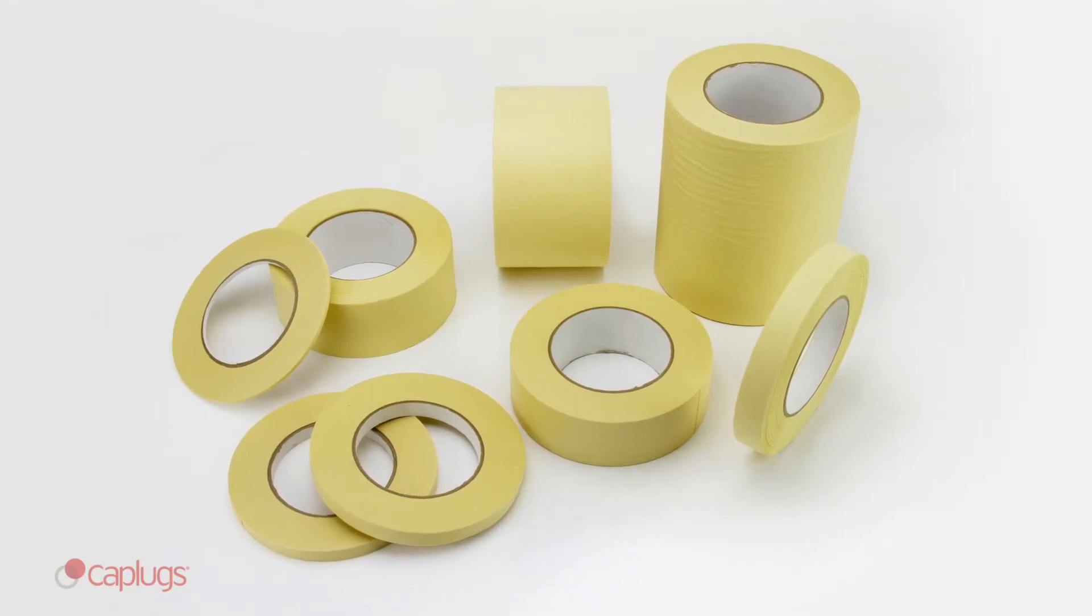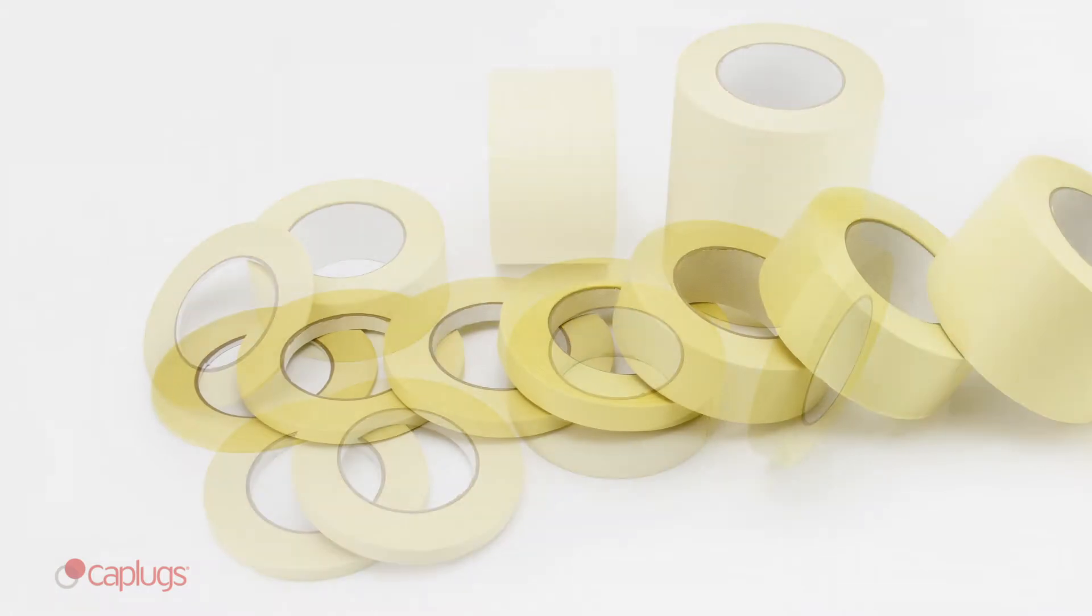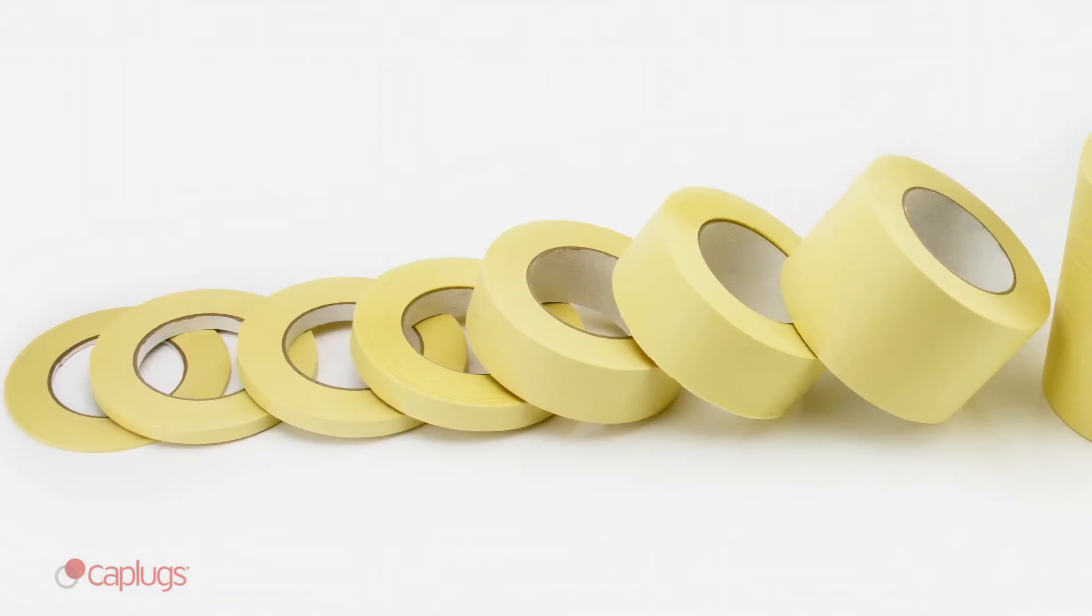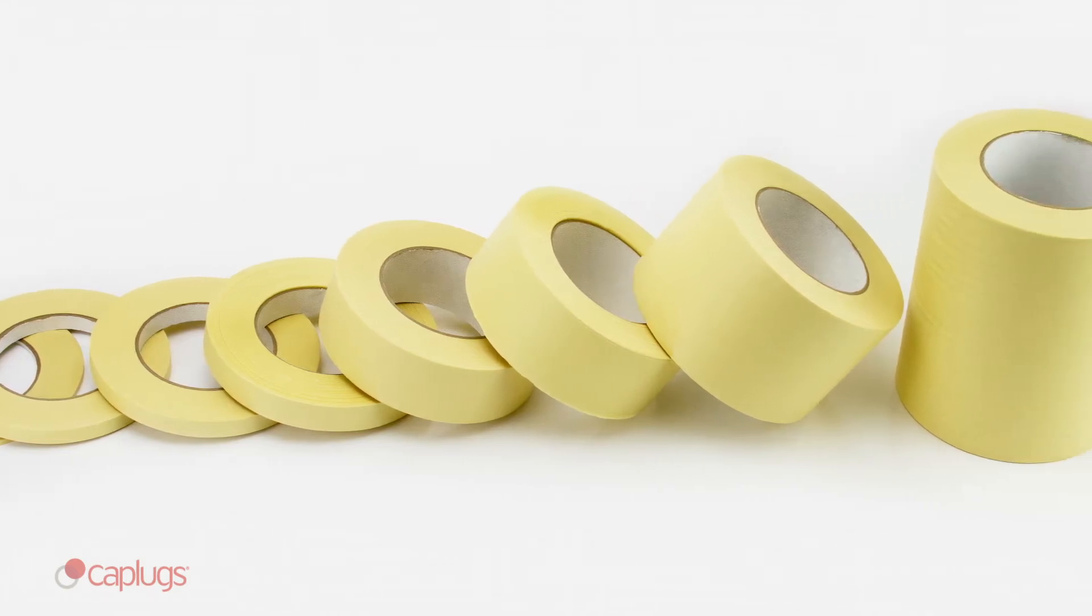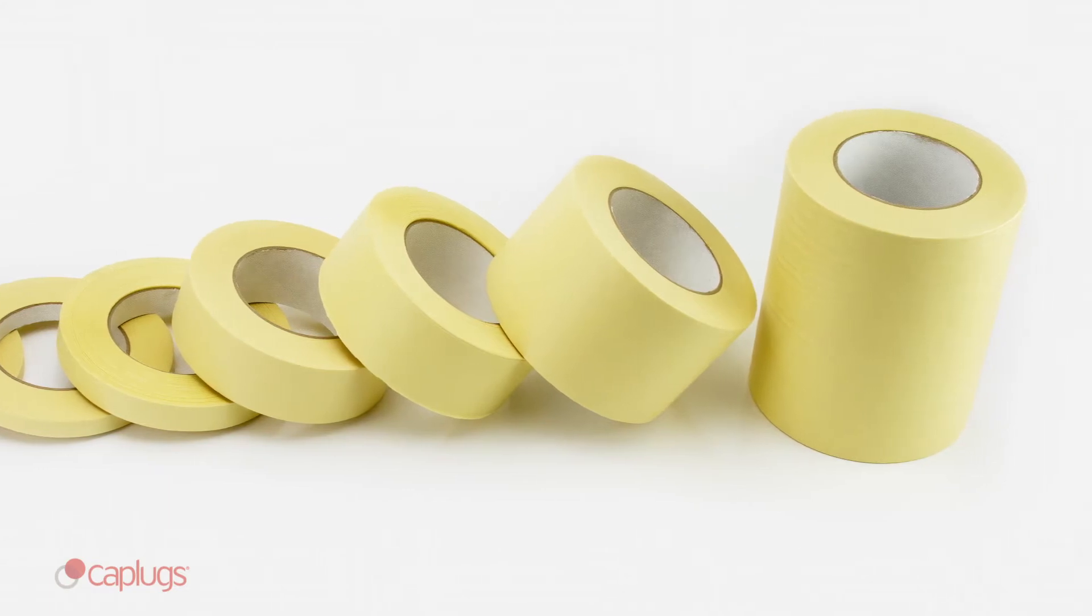The KD11-SH series is a pressure-sensitive crepe paper tape used for masking. KD11-SH is available in 26 different widths, ranging in size from 1/8 of an inch to 6 inches across, and in metric sizes 5 millimeters to 150 millimeters across.